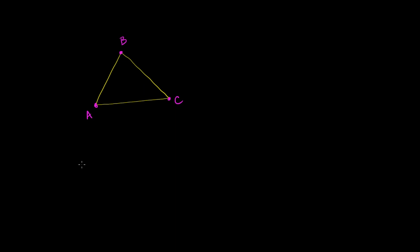What I want to do first is just show you what the angle bisector theorem is, and then we'll actually prove it for ourselves. So I just have an arbitrary triangle right over here, triangle ABC. What I'm going to do is draw an angle bisector for this angle up here — we could have done it with any of the three angles, but I'll just do this one. So I'm going to bisect angle ABC. This angle right over here is equal to this angle right over here.